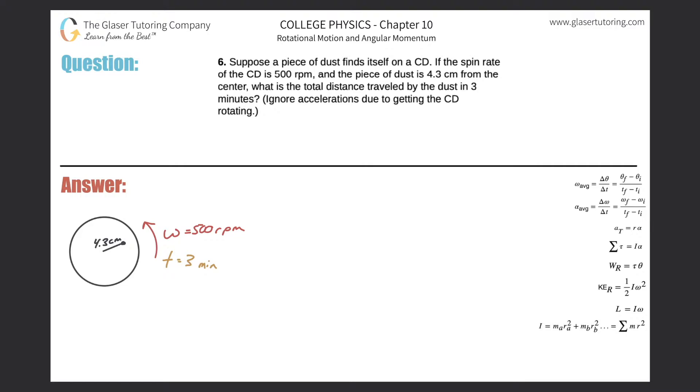Number six: suppose a piece of dust finds itself on a CD. If the spin rate of the CD is 500 rpm and the piece of dust is 4.3 centimeters from the center, what is the total distance traveled by the dust in three minutes? Ignore accelerations. In order to answer this question, we're trying to find the total distance that this piece of dust, which I detailed in the picture right over here, is going to make. Notice this is a CD and it's rotating, so the distance this piece of dust will make is going to be circular. It's going to travel a circular distance.